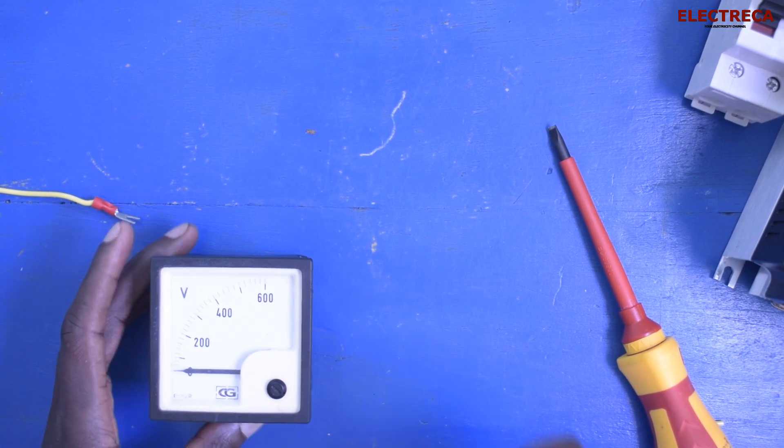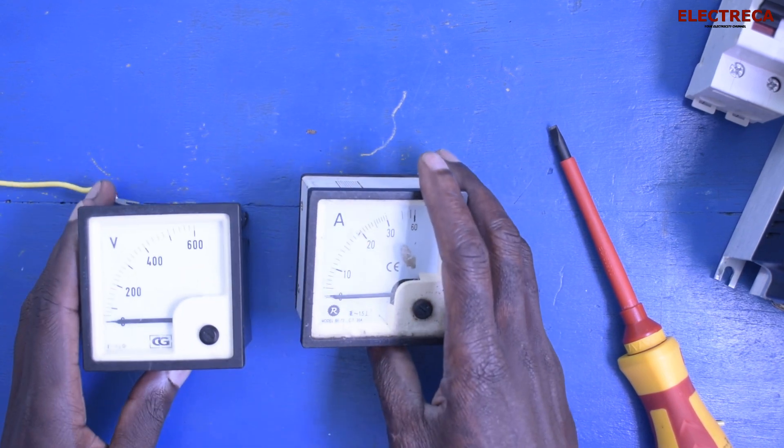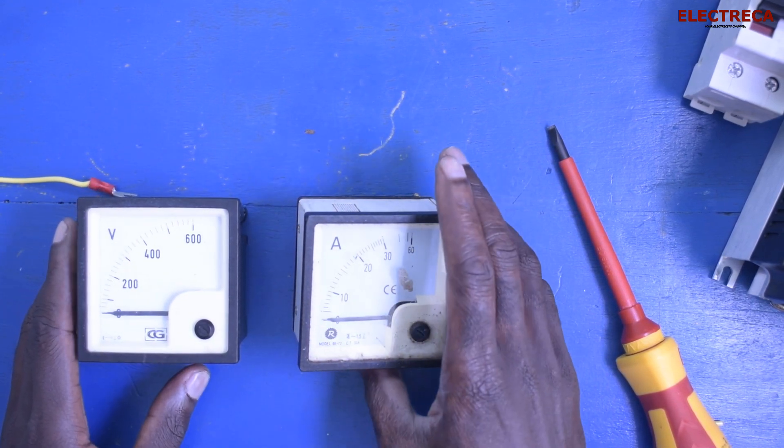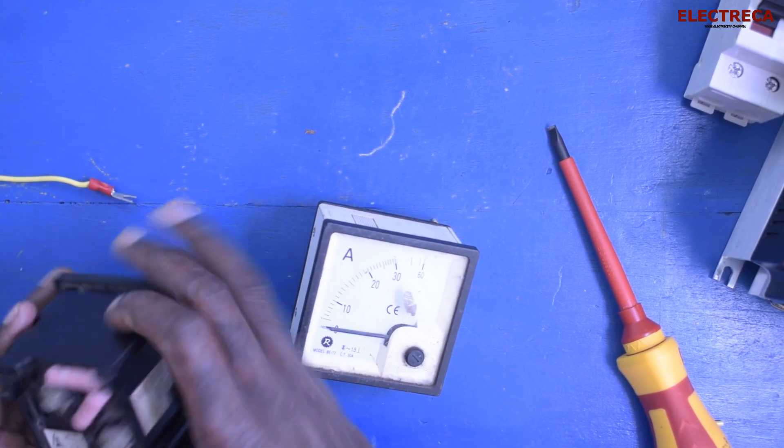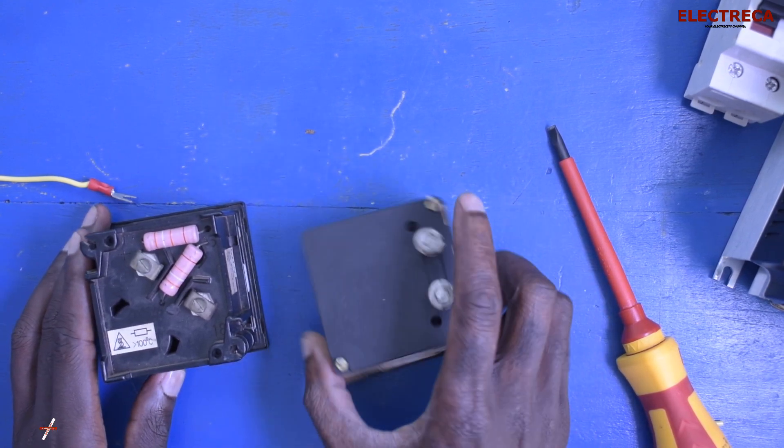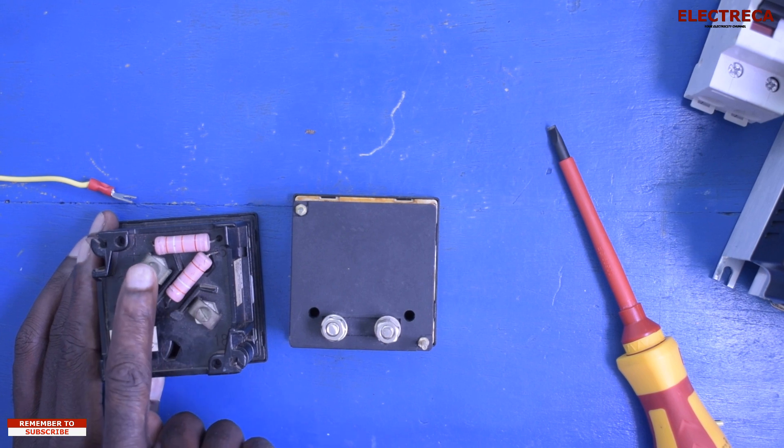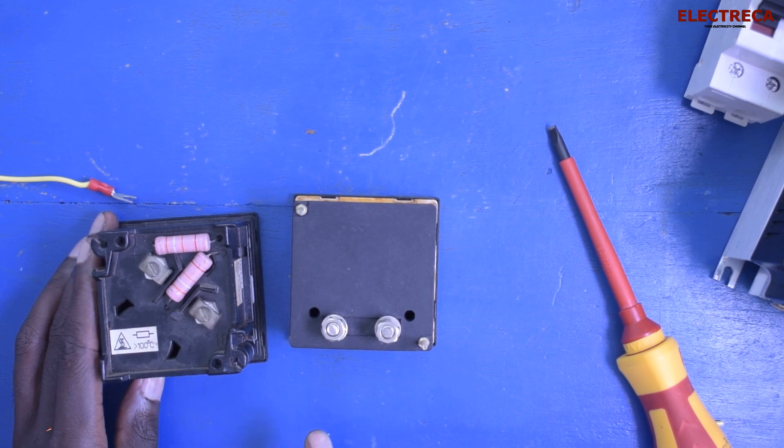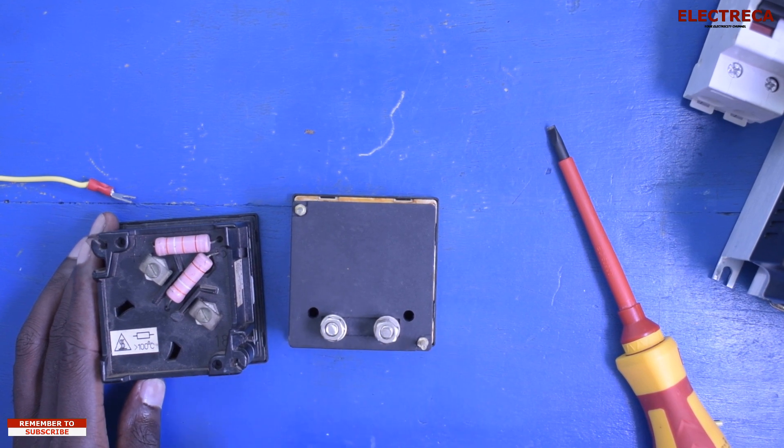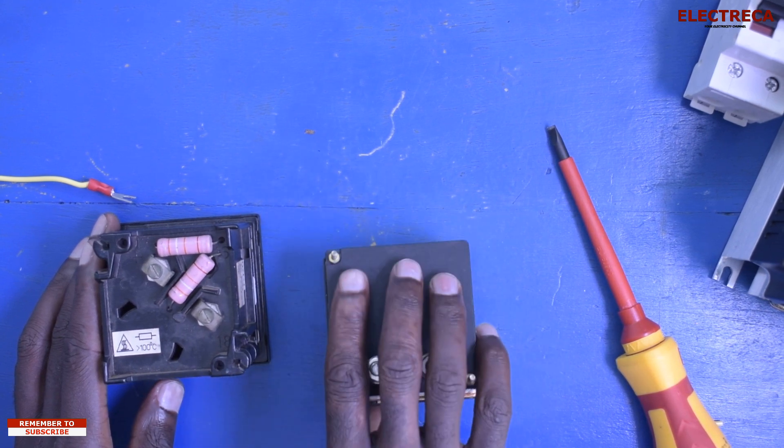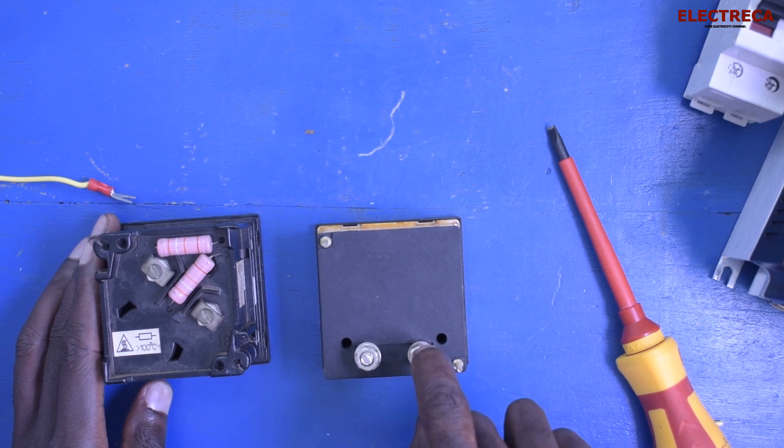Unlike the ammeter where you have to connect it in series with the load, the voltmeter will be connected in parallel. Because if you look at the terminals of this voltmeter, you will have to connect to neutral and live, whereas the ammeter you have to connect it in series with the load.